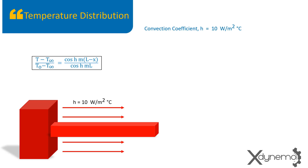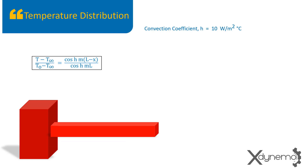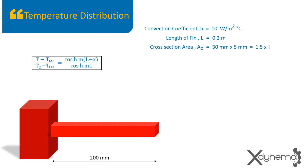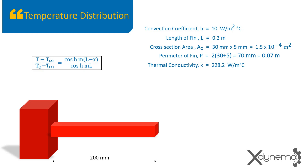The convection coefficient is 10 Watt per meter square degree Celsius. The length of FIN is 200 mm. Cross-section area is 30 mm by 5 mm, equals 1.5 × 10⁻⁴ meter square. The perimeter of the FIN is 0.07 meter. Aluminium has thermal conductivity of 228.2 Watt per meter degree Celsius. M equals the square root of (h·P)/(k·A_c). On substituting the above values, we get M equal to 4.522.